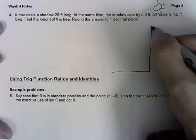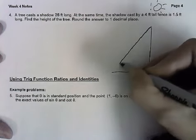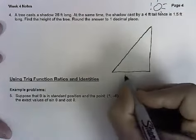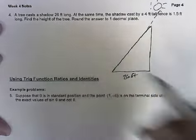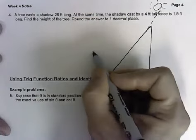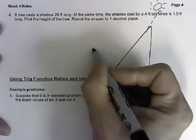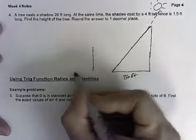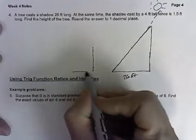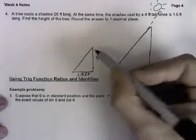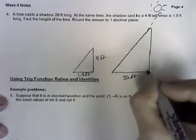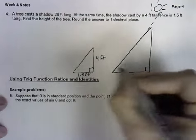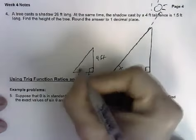So in other words, here's our sun up here. And the shadow that is casting from the tree ends up being 26 feet long. And at the same time, so with the sun at the same angle, we have a 4 foot tall fence. And the shadow that it's casting is 1 and a half feet long. But the idea is that the angle of elevation of the sun in both of these is the same. So in both of these triangles, we have a right angle here, and we have the same angle here as we do here.